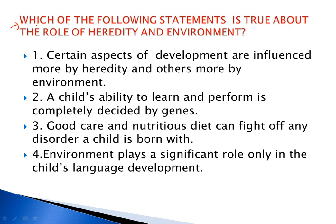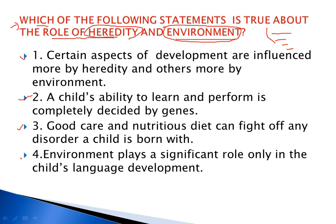Question 1: Which of the following statements is true about the role of heredity and environment? In the development of a child, both heredity and environment play a vital role. There are four statements and we have to pick out the one which is true about heredity and environment's role. Option A: 'Certain aspects of development are influenced more by heredity and others more by environment' — this is absolutely correct.